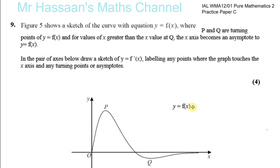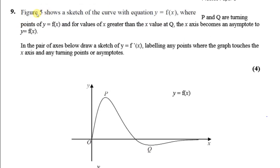It's based upon a brand new topic, which is about how to sketch the gradient function. In this question, we're given a function without the equation of the function. Figure five shows a sketch of the curve with equation y equals f of x, where p and q are turning points — stationary points — of y equals f of x. You can see p is a maximum and q is a minimum. For values of x greater than the x value at q, the x-axis becomes an asymptote to y equals f of x, so it goes closer to the x-axis without actually touching it.